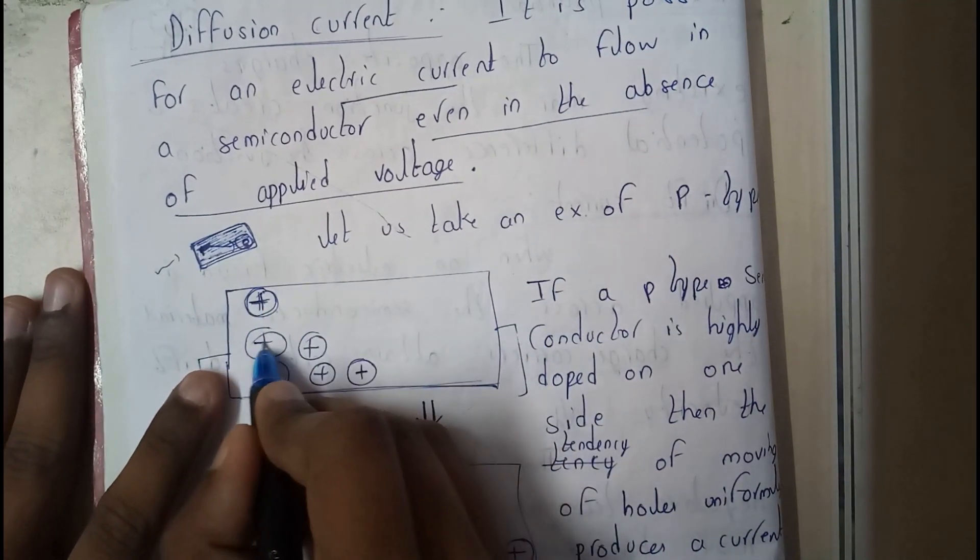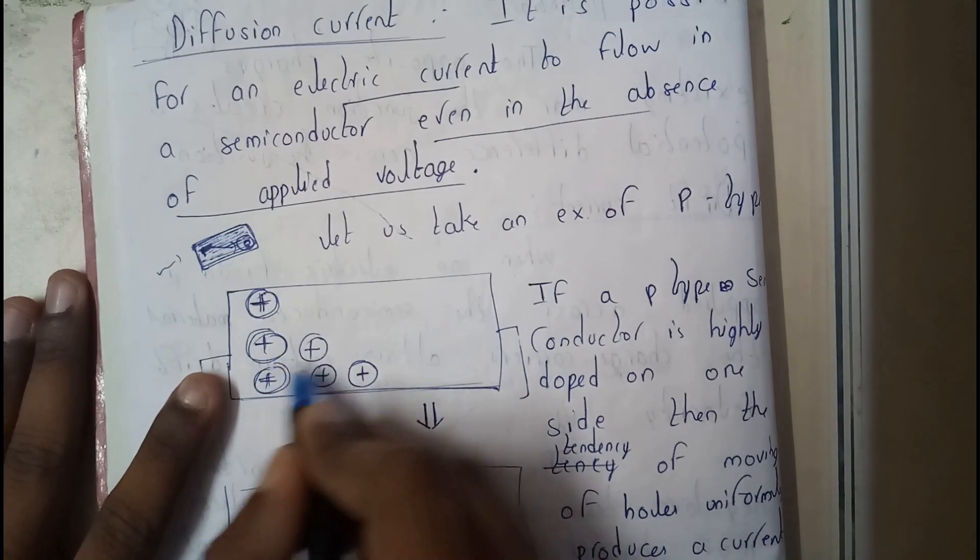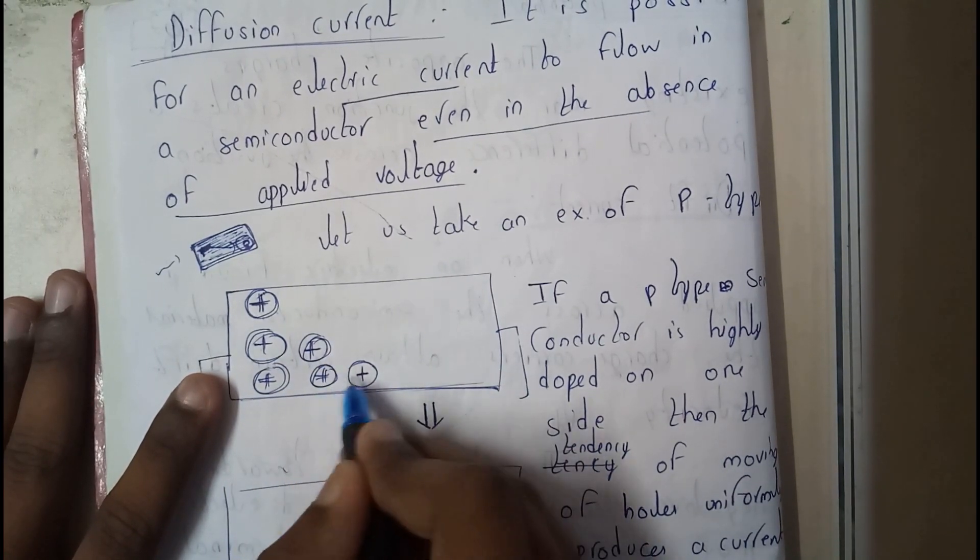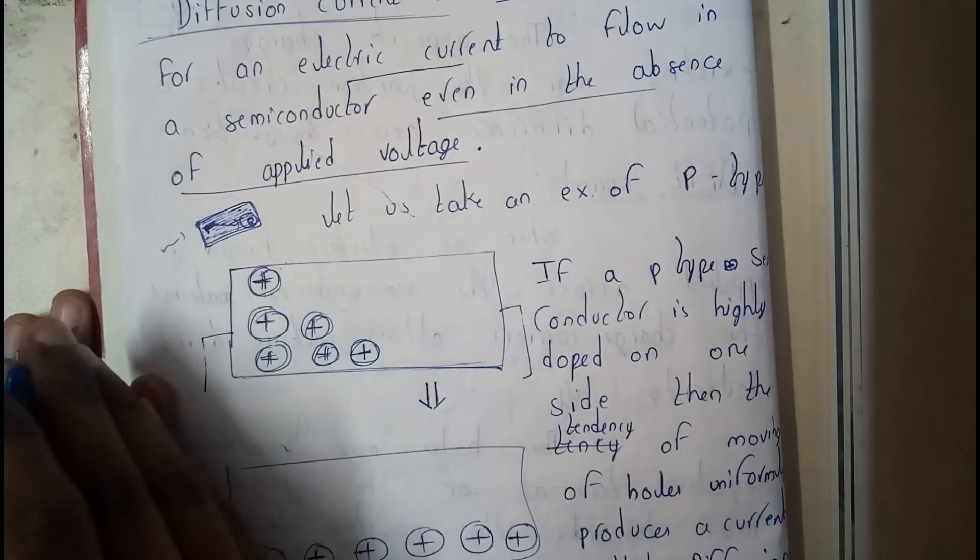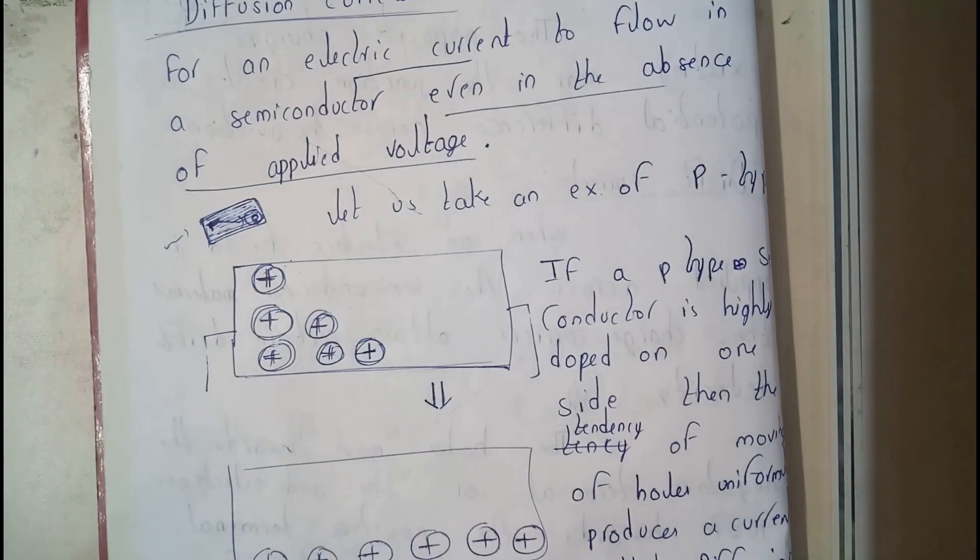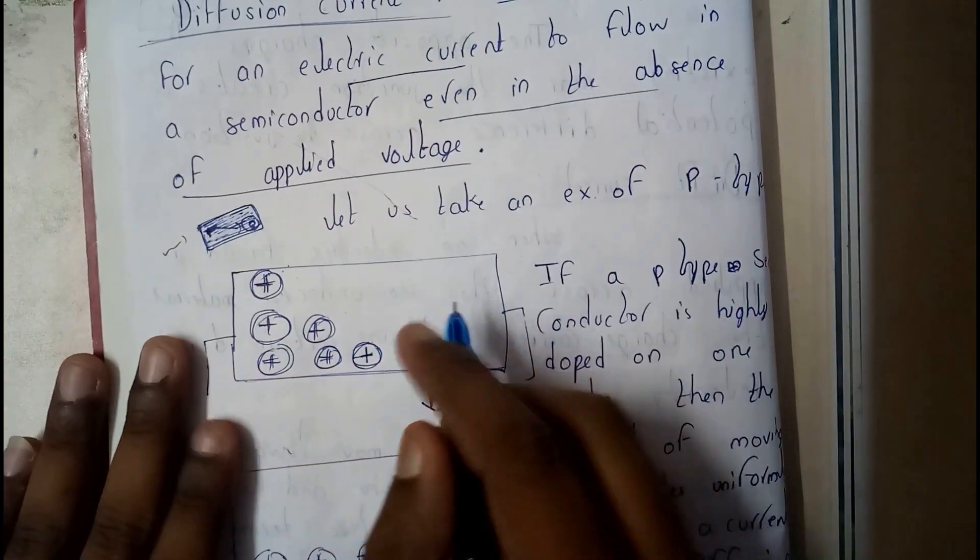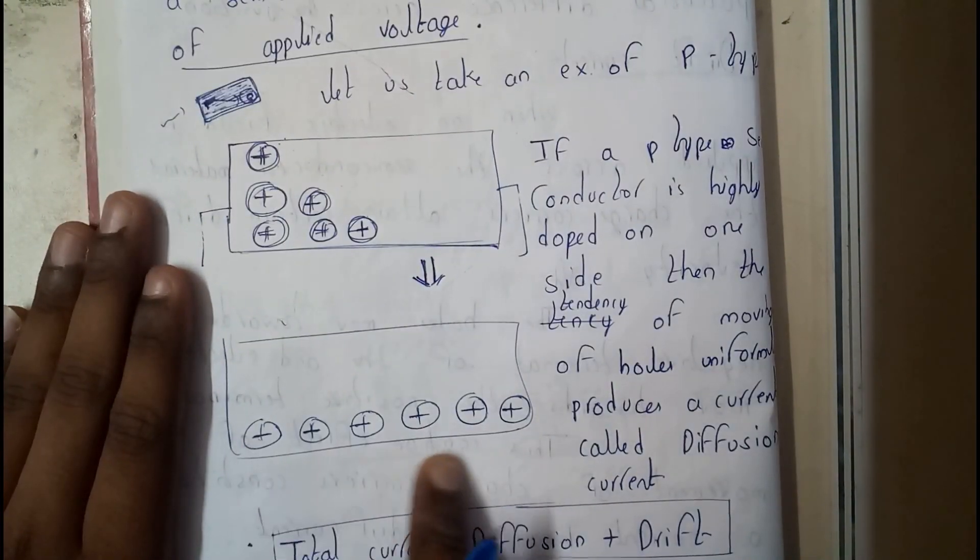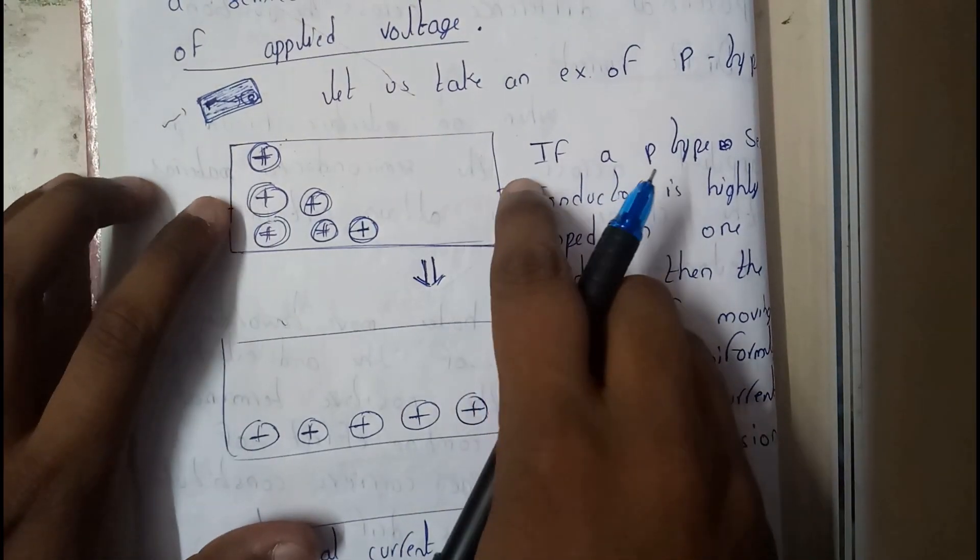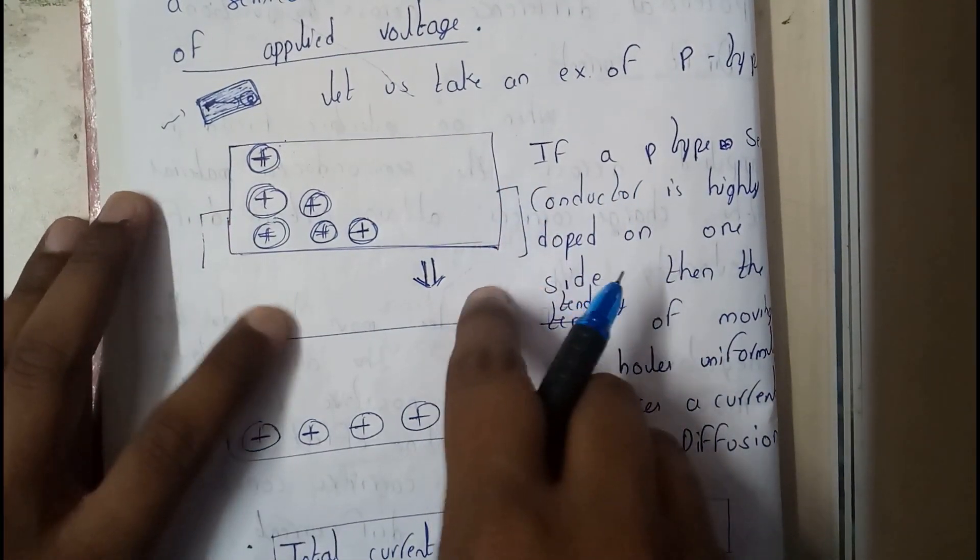Let us assume this is a P-type semiconductor. P-type has the maximum number of holes. Let's say we have six holes occupied on the left part only. Due to diffusion current, they will be aligned in a uniform way.